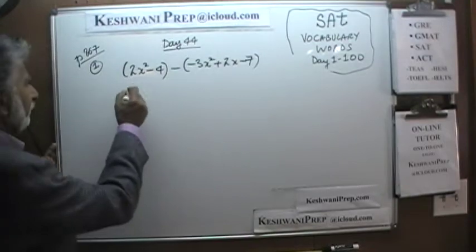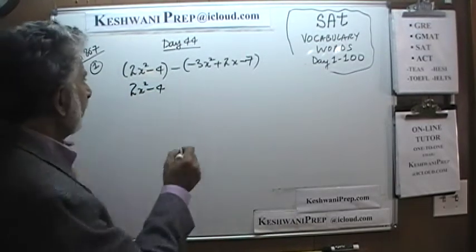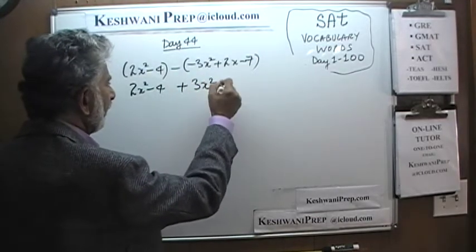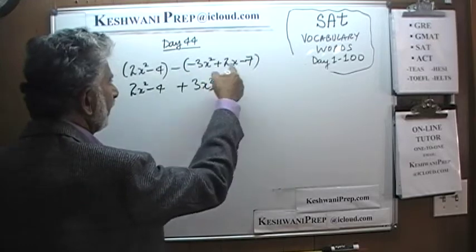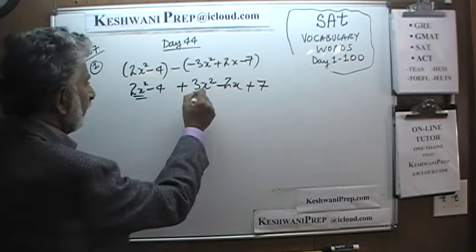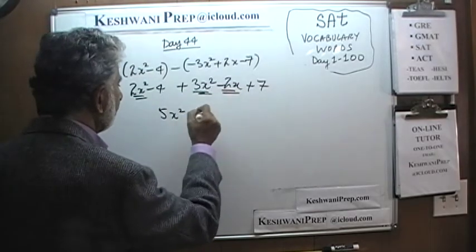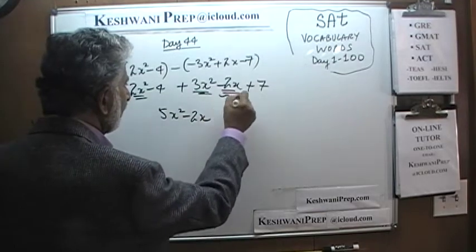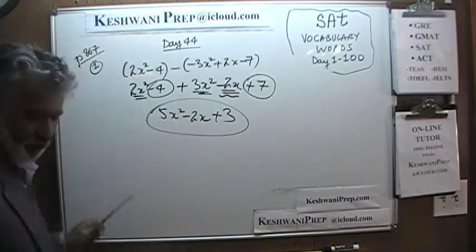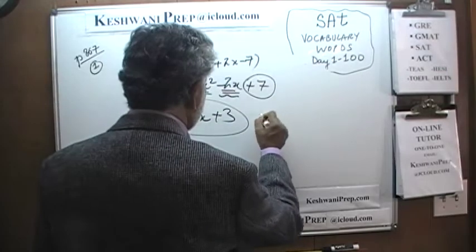As you can see, there is nothing much here. Open the parenthesis, make sure you pay attention to the negative sign. Negative and negative becomes positive 3x², negative and positive becomes negative 2x, and negative and negative becomes positive 7. We have 2x² and 3x², so that's 5x². We have negative 2x, and then negative 4 plus positive 7 gives us positive 3. Whatever matches that is your answer — that's answer choice A.